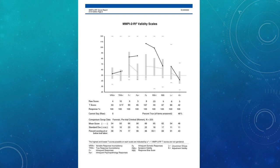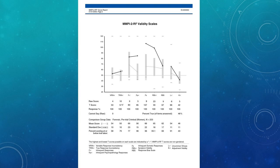In the context of this evaluation, I administered the MMPI-2-RF. Using the forensic pretrial criminal group — women — as the comparison, she responded to all items. Looking at the validity scales, there were no problems with random or indiscriminate responding, but with respect to the over-reporting scales there were some particular concerns — her F scales were quite elevated, especially FP.